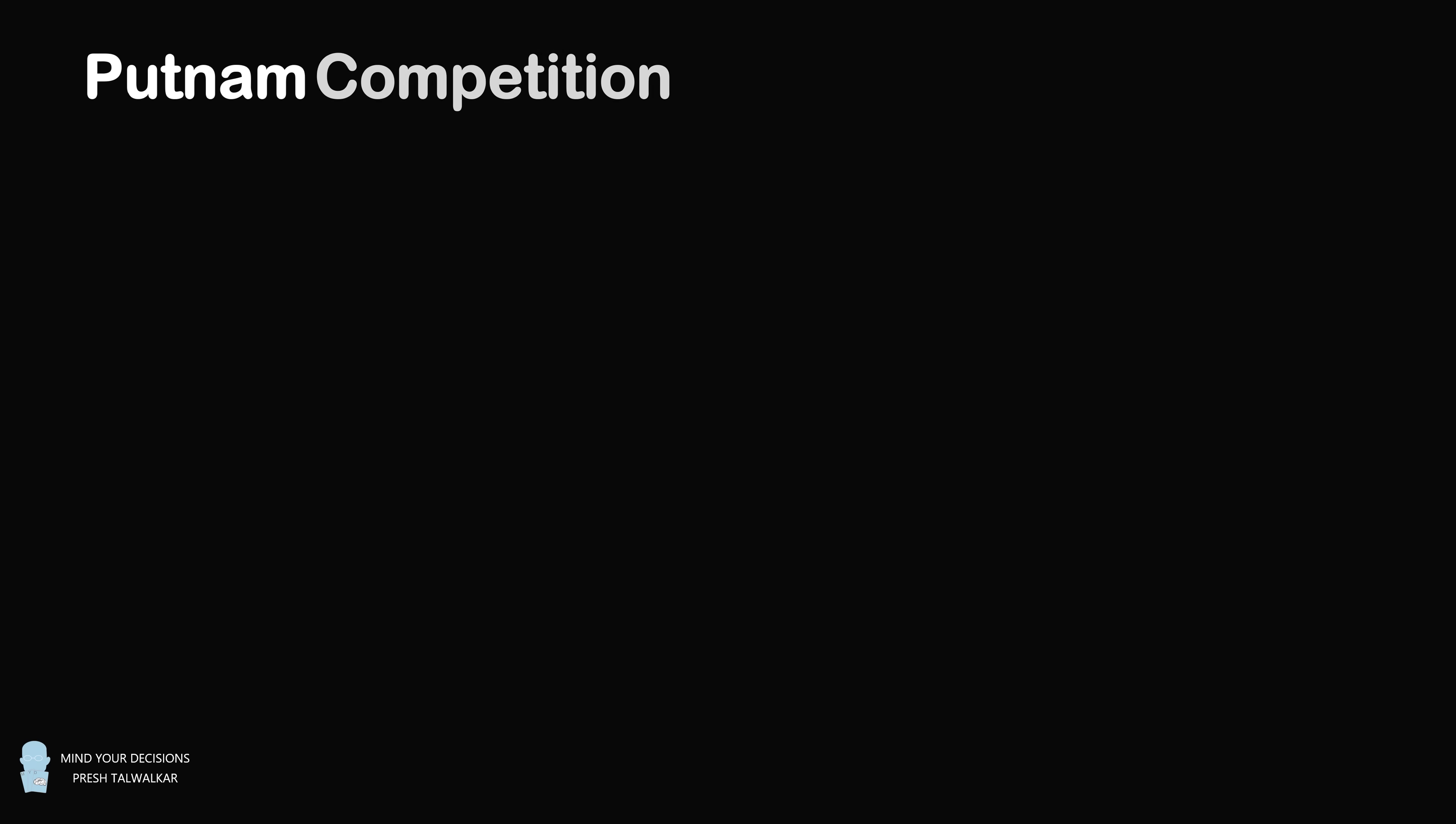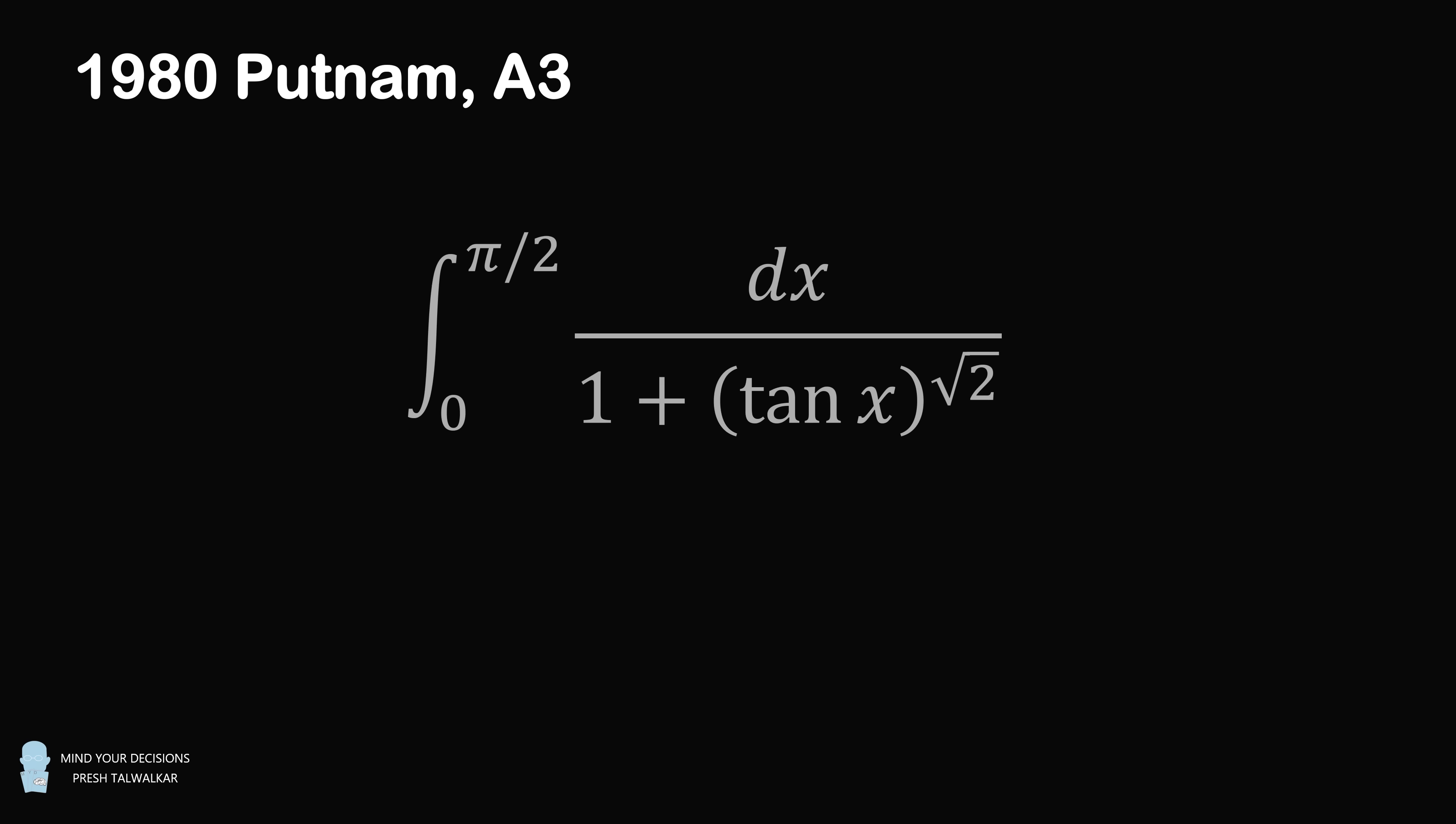This question comes from the 1980 Putnam competition problem A3. Evaluate the integral from 0 to pi over 2 of dx divided by 1 plus tangent x to the power of root 2.